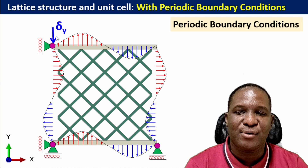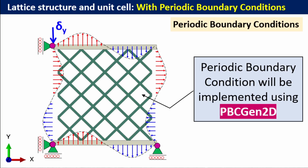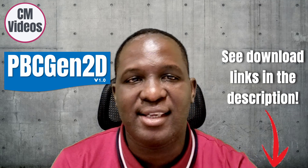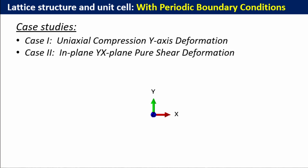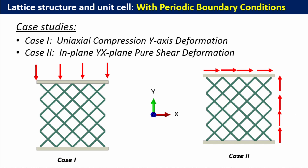I'll show what happens when applying a compressive load on this domain. Since there is no commercially available way of applying periodic boundary condition, I'm going to use a software I developed called PBC2DGen — the link is in the description of this video. There are also videos in the cards on how to work with PBC2DGen. The two types of loading we'll look at are a uniaxial compression test and a pure shear test — specifically the YX pure shear test.